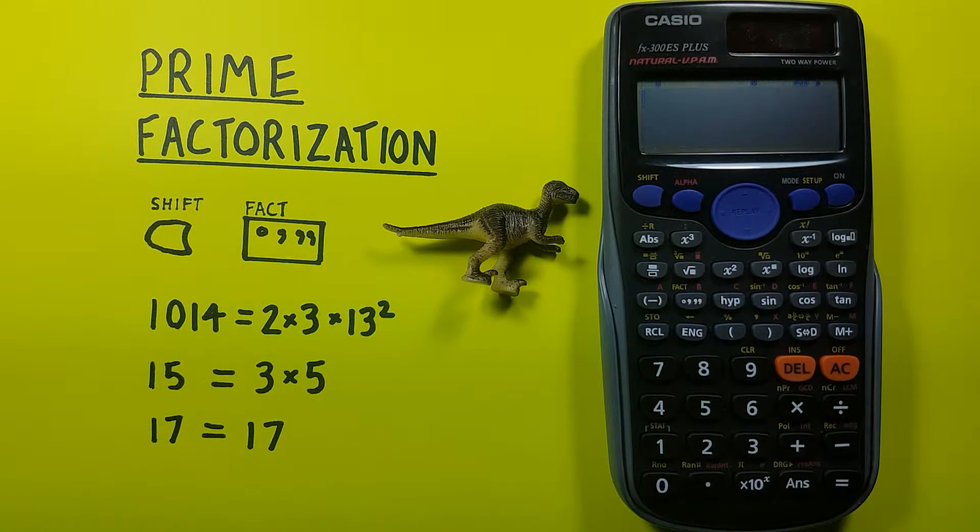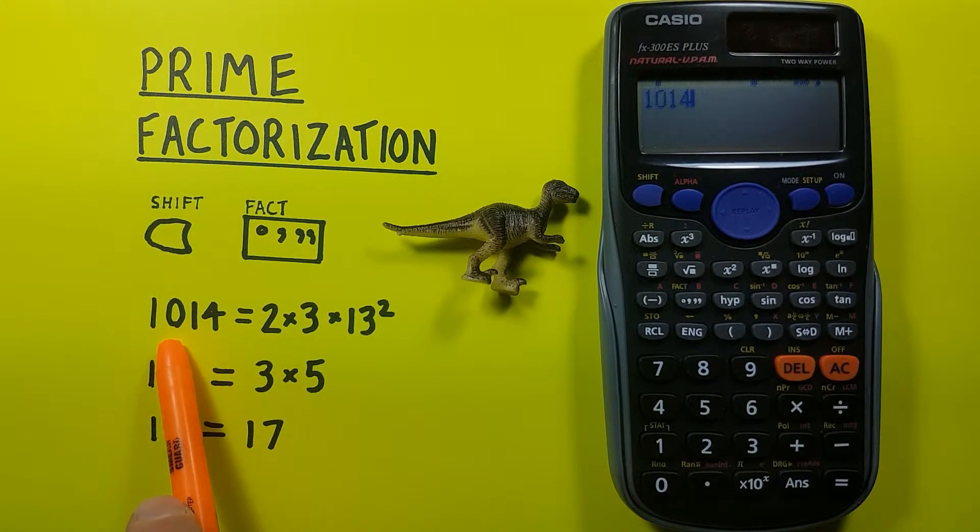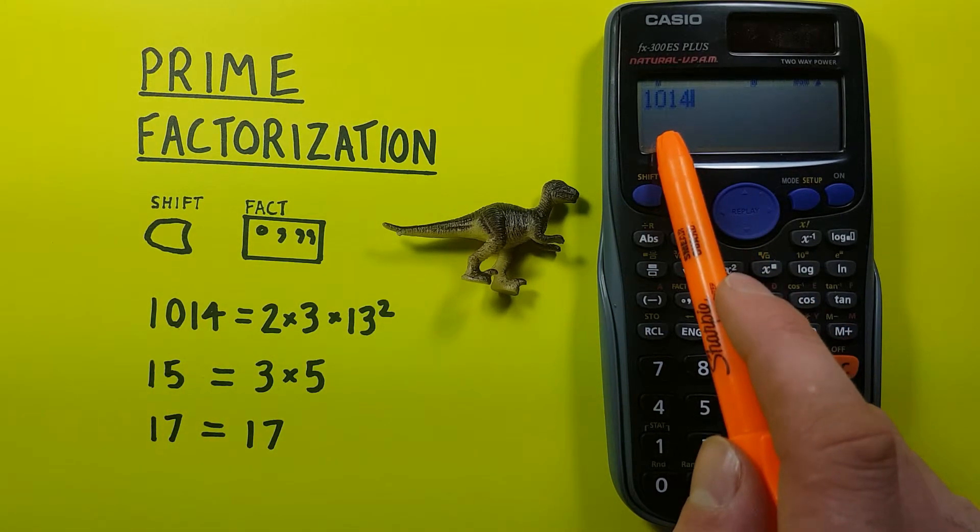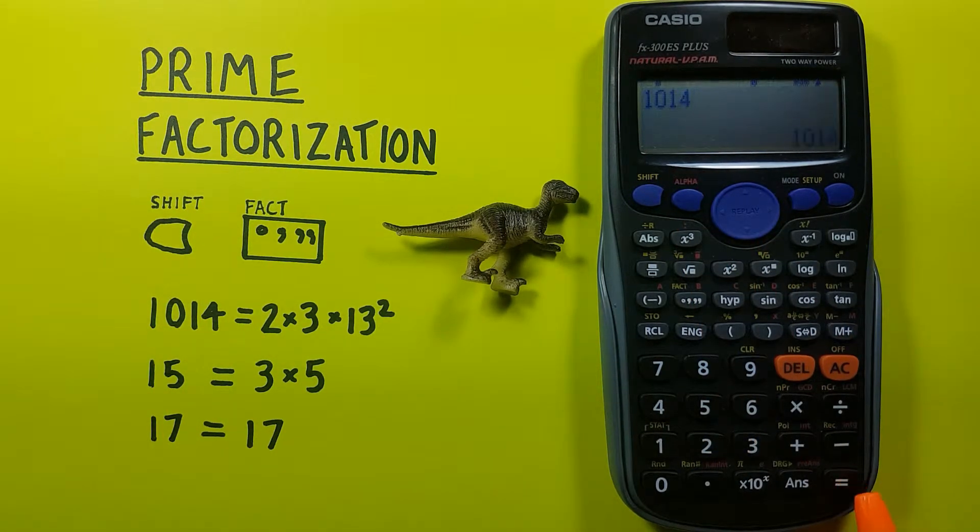If we want to find the prime factors that go into a number, all we have to do is first place the number on the screen. So let's say we wanted to find the prime factors of 1014. We type it in, and then press equals so that it's down in the bottom right hand corner.